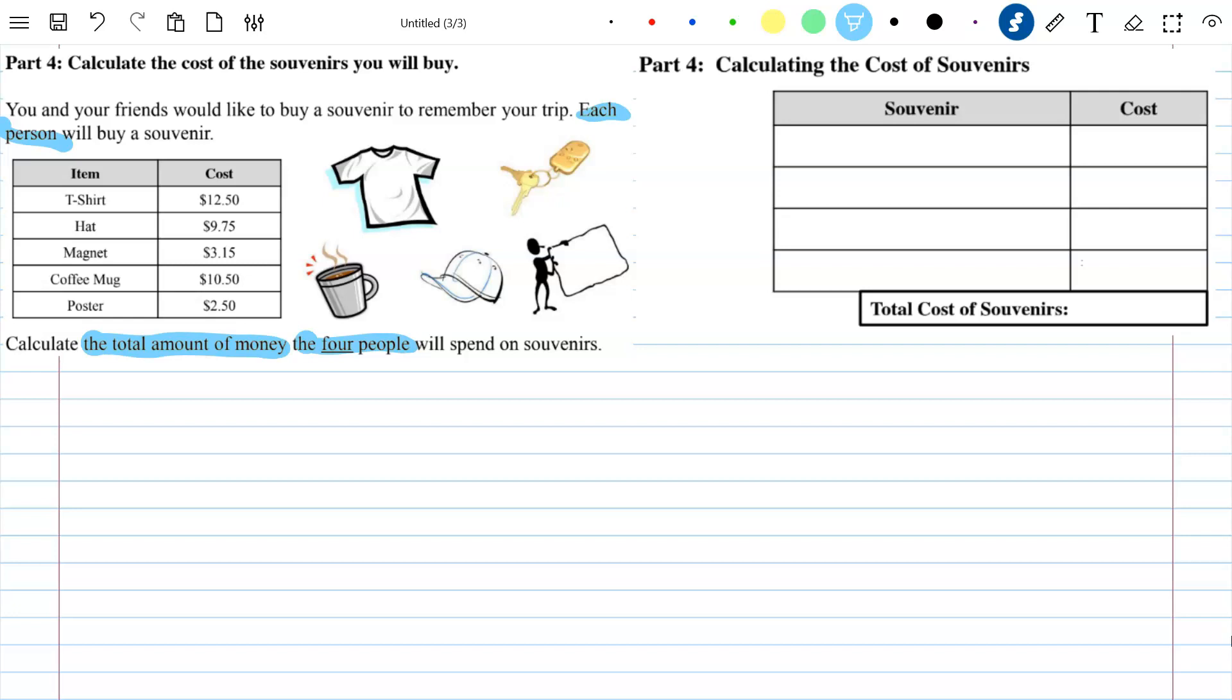So this was really just you picking four different items, making sure your decimals lined up, and double-checking your addition. That's it.